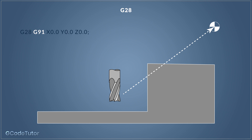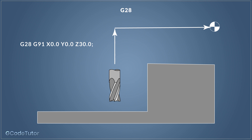To use G28, the line of code includes a G91. G91 is important because it puts the machine into incremental mode. If we omitted this and the machine was in absolute mode, it would go to our working datum set with G54 or G55 first before it goes to the machine datum. With G28, it will go to the X, Y, and Z position we specify before it goes back to the machine datum.